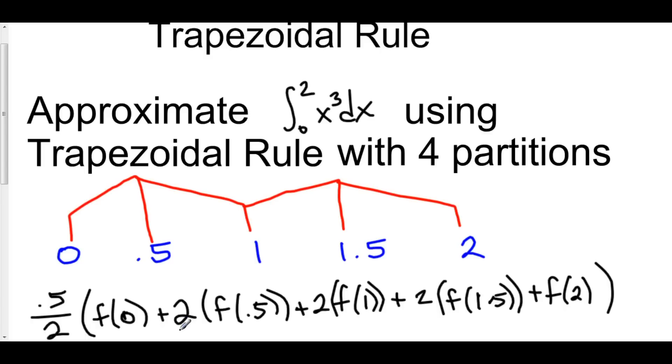Now, f of 0, that's 0 cubed, that'll be 0. 0.5, f of 0.5 would be 1/2 cubed, that's 1/8. f of 1 is 1 cubed, that'll be 1. f of 1.5 is 3/2 cubed, that's 27 over 8. And finally, f of 2 would be 2 cubed, that's just 8.